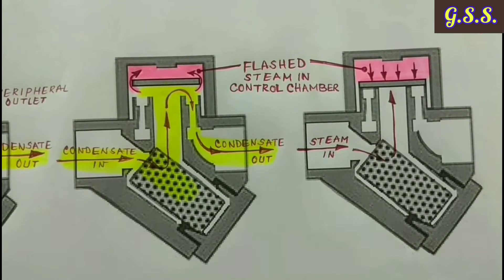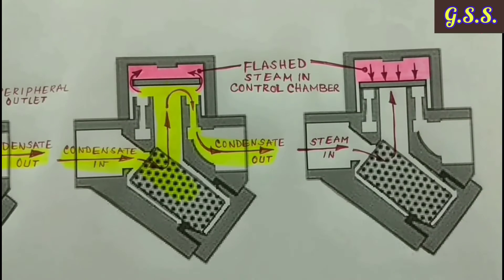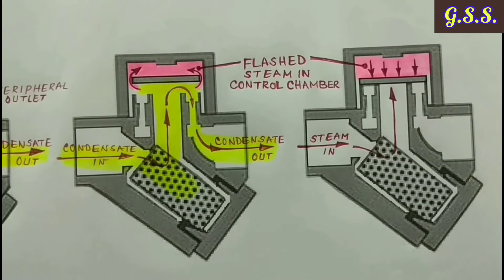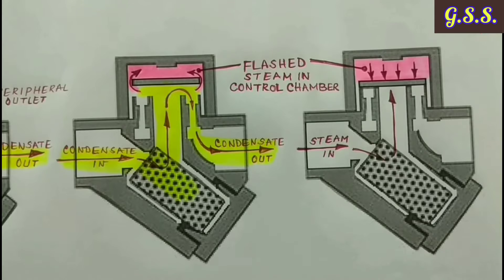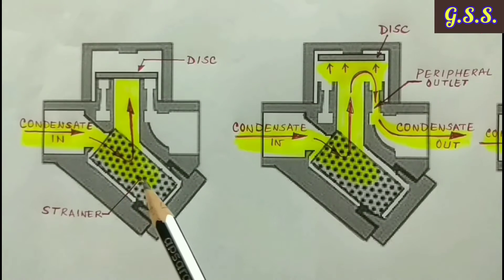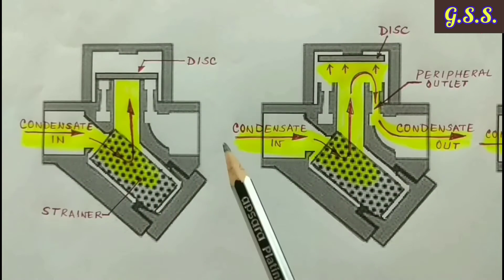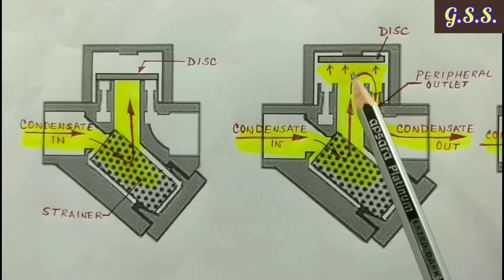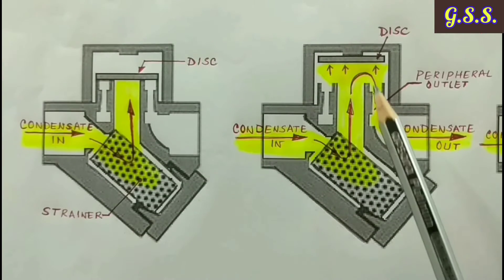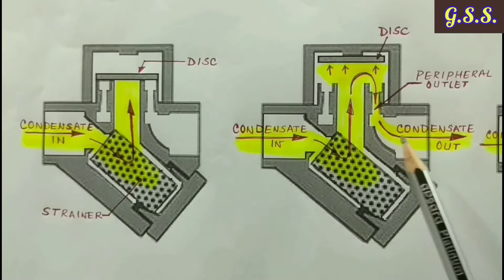After some time, the entrapped steam inside the control chamber gets condensed due to radiation heat loss and the cycle gets repeated. That means the incoming condensate again pushes the disc up and starts flowing out.